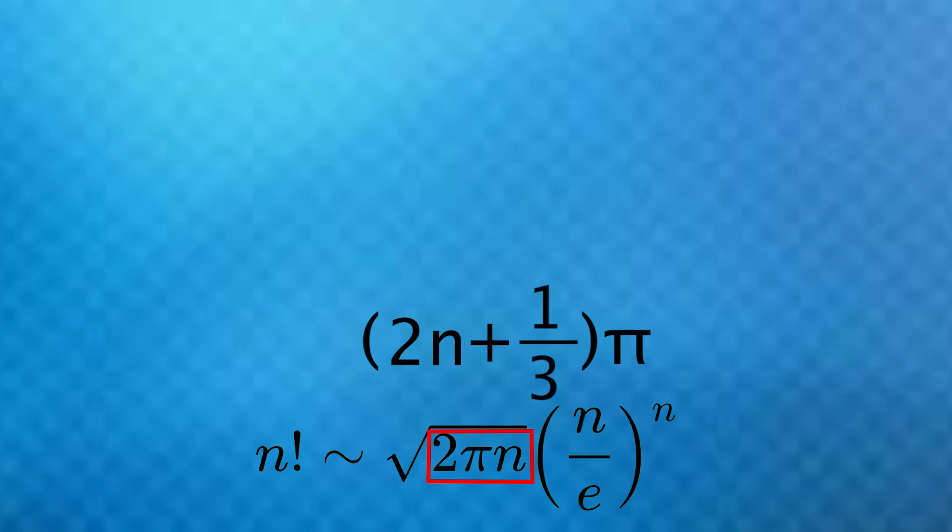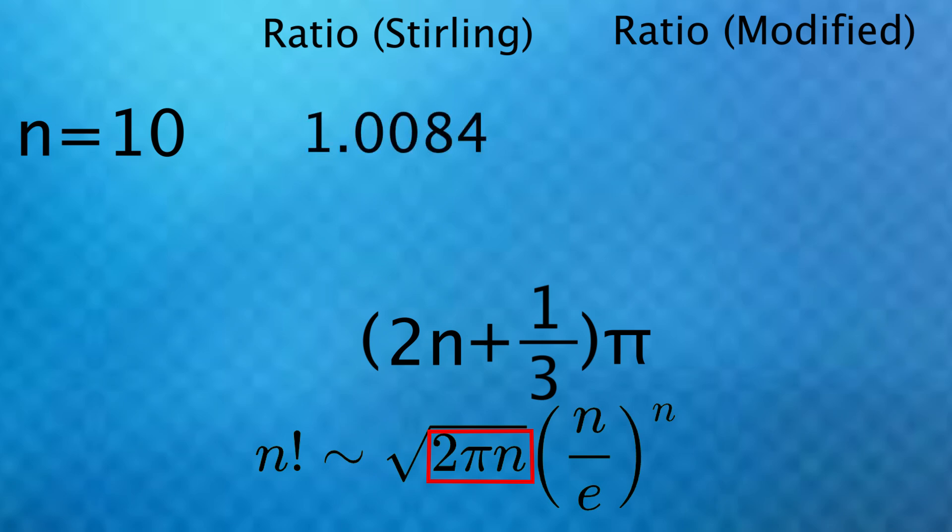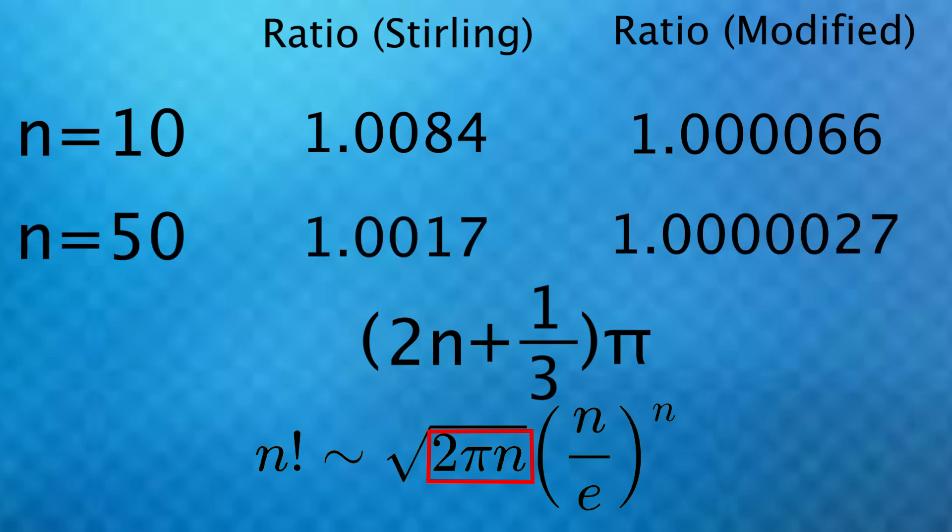And actually while editing this, I found something else really weird regarding this part of Stirling's formula. The 2 pi n here under the square root can also just be written as 2n pi, same thing. And if we just make a small modification of adding 1 third to 2n, the formula becomes much more accurate. With Stirling's formula for n equals 10, that ratio we just saw was this. But with the modification, it's just over 1.000006. And for n equals 50, the ratio goes from this to this.